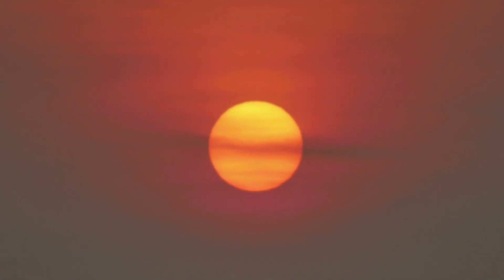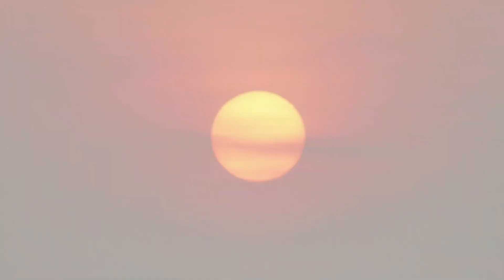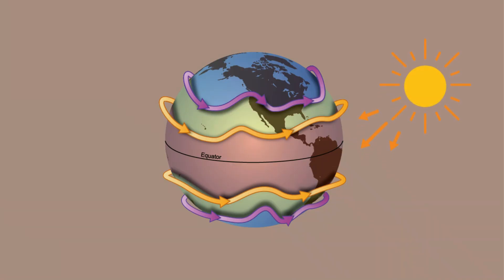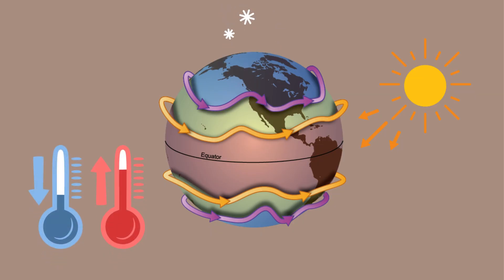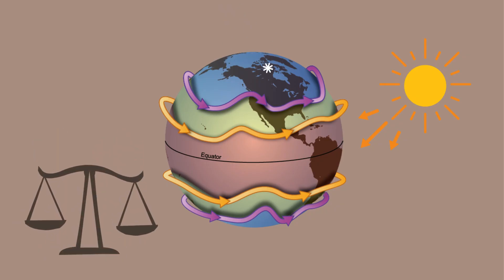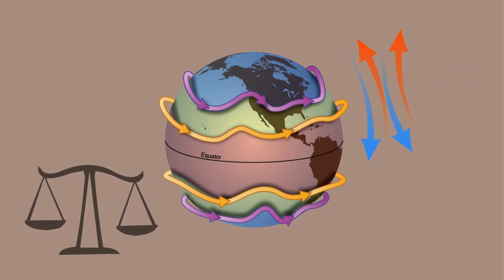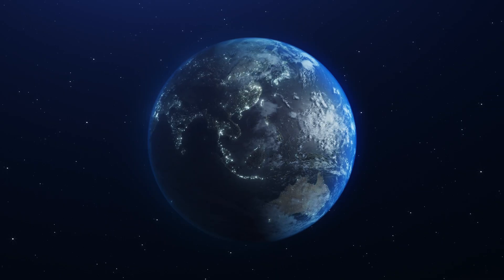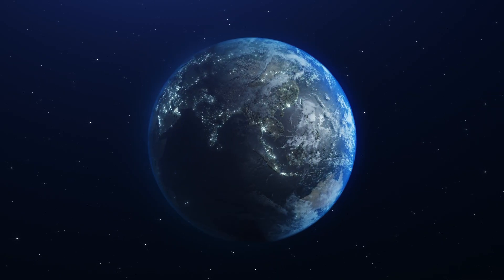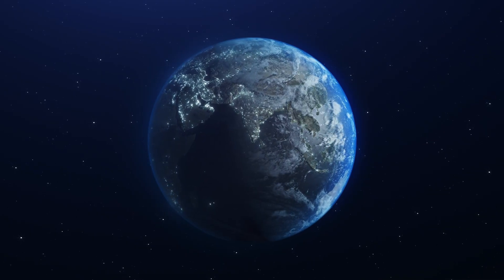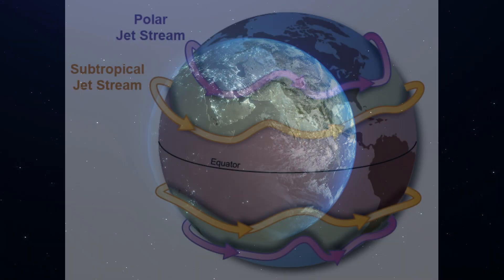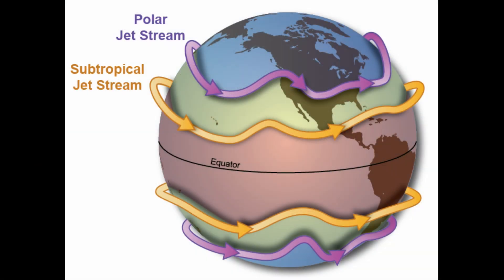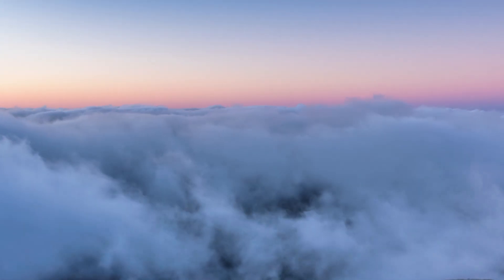Jet streams exist because earth is heated unevenly by the sun. The equator receives much more solar energy than the poles, which creates strong temperature differences between air masses. The atmosphere constantly tries to balance those differences — warm air moves toward colder regions, and cold air moves toward warmer regions. But earth is rotating. Because of the Coriolis effect, air moving north or south is deflected. Instead of flowing straight, the wind bends into a powerful west to east current. That is the foundation of the jet stream.